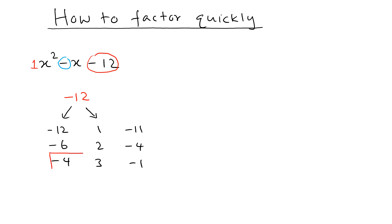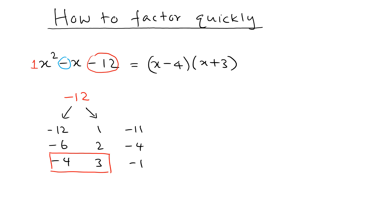Since negative 4 and 3 are the right factors, those two give us our answer. The factorization is simply x minus 4 times x plus 3. That's how quickly you can factor a quadratic polynomial — you just need to find the factors that add up to the coefficient of the middle term.